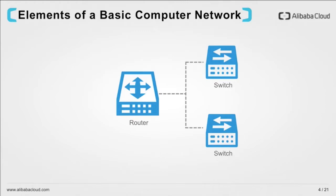The next layer is our switches. Each switch is responsible for moving traffic between servers within the same network segment. If a server in one network segment needs to talk to a server in another network segment, such traffic needs to go through the router. The router has the particular locations for each of the switches and their respective subnets and is able to route traffic to the correct switch and then eventually to the correct server intended.